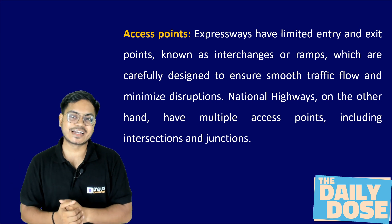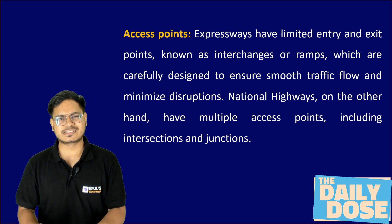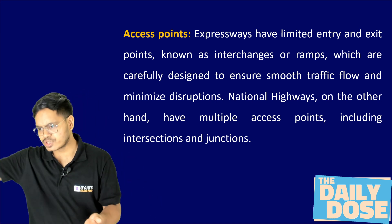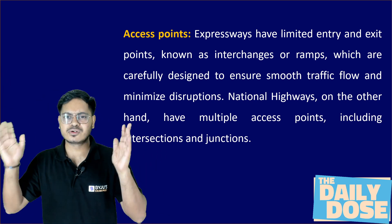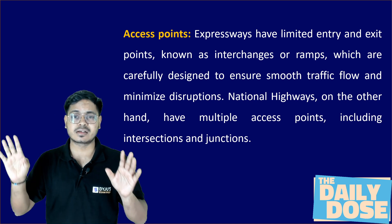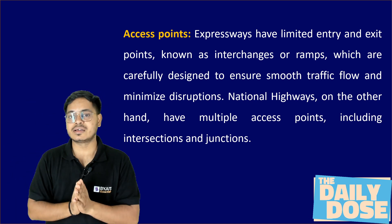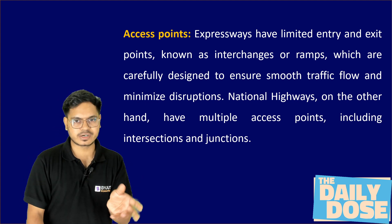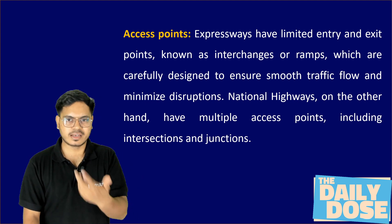On a national highway, however, there are multiple access points. For example, if an expressway is going through a city, there may only be a few designated connections. But on a national highway passing through a city, there could be 4, 5, 7, or even 10 connections — there are no controlled access points, and anybody can access from anywhere.